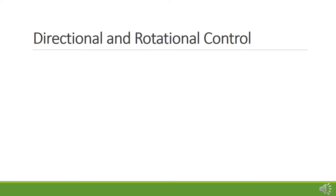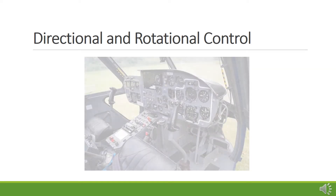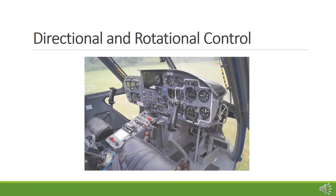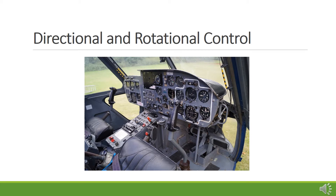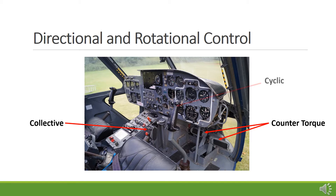Directional and rotational motion of a helicopter is accomplished through three control mechanisms: a counter torque control, collective control, and cyclic control, which will be introduced in this lesson.